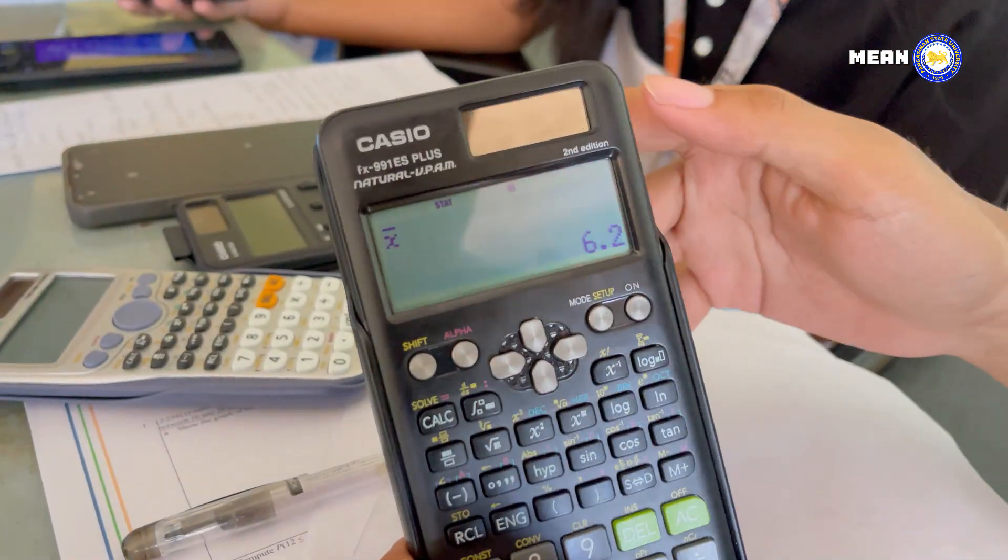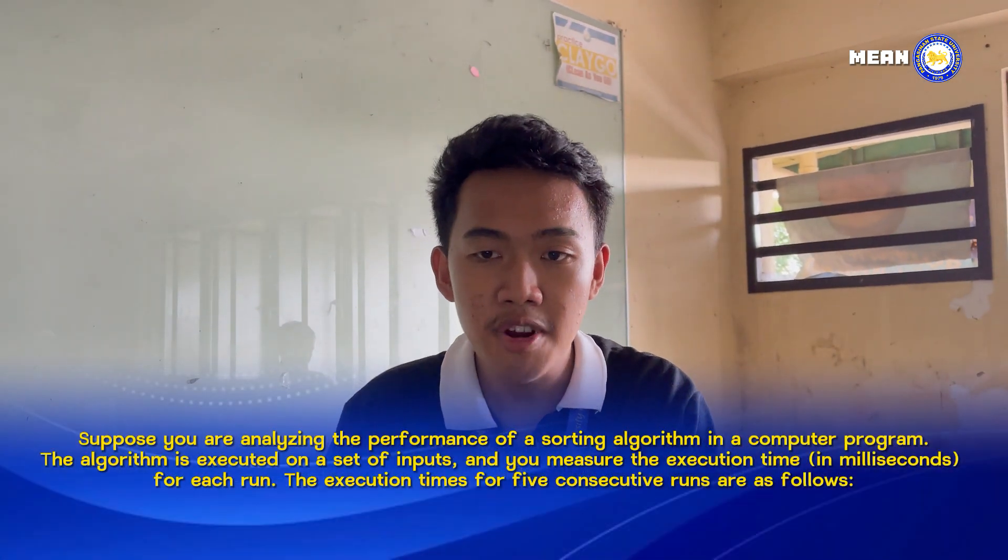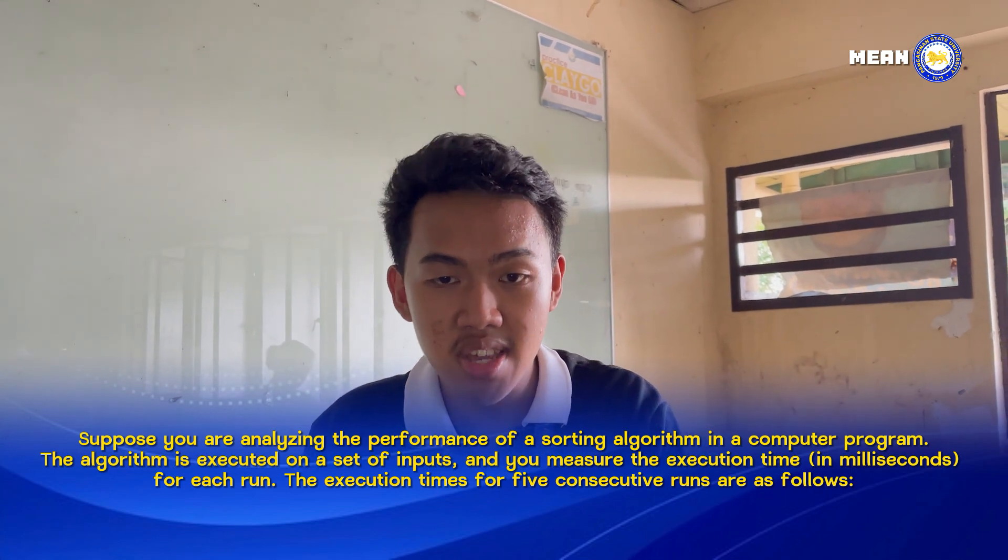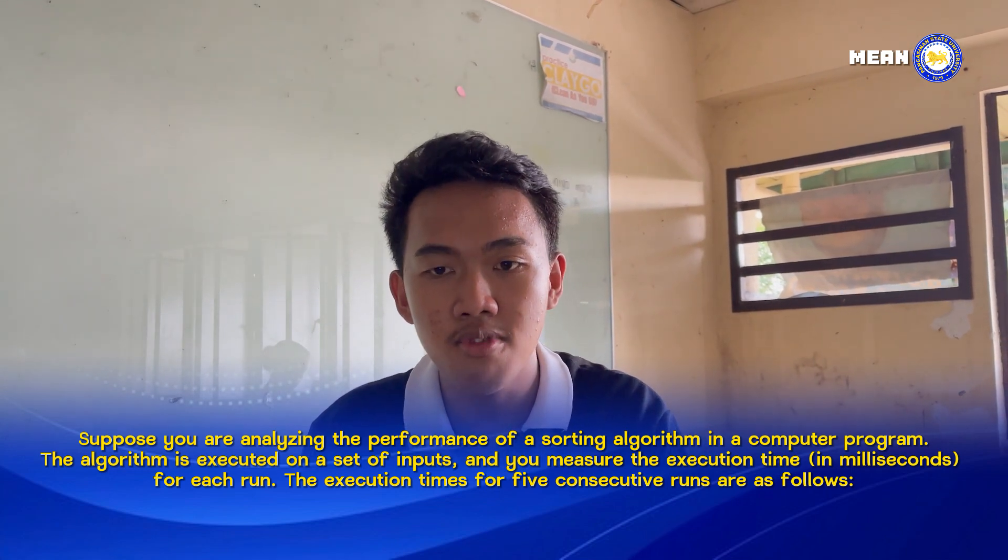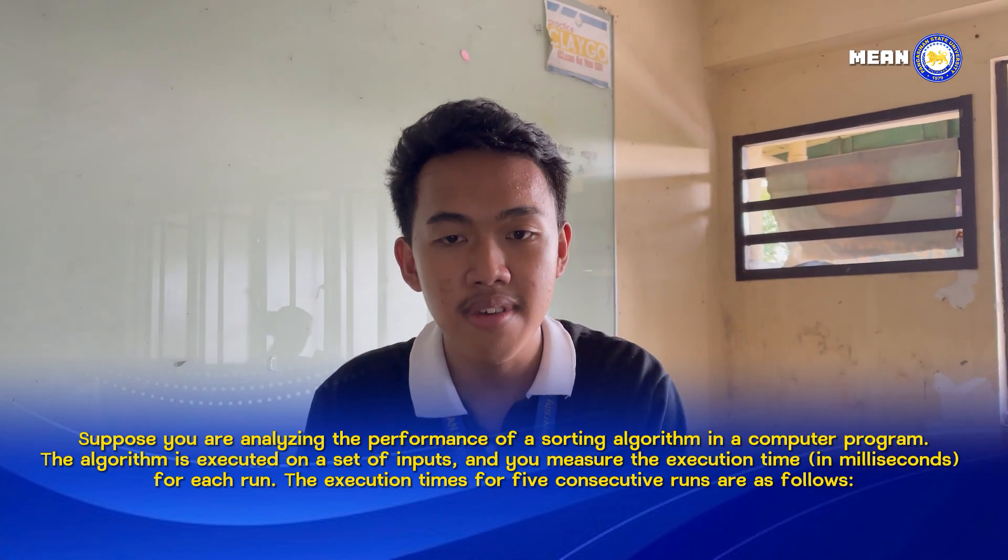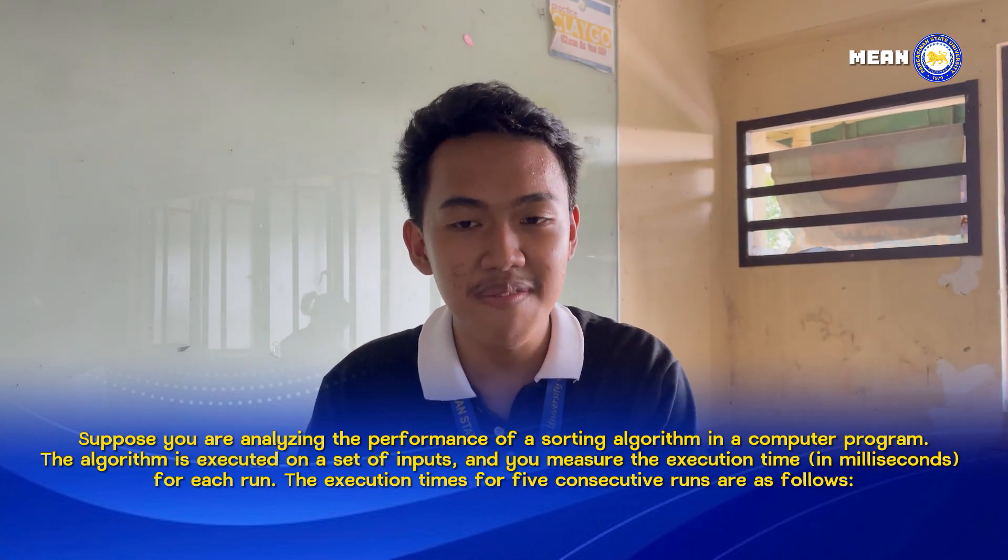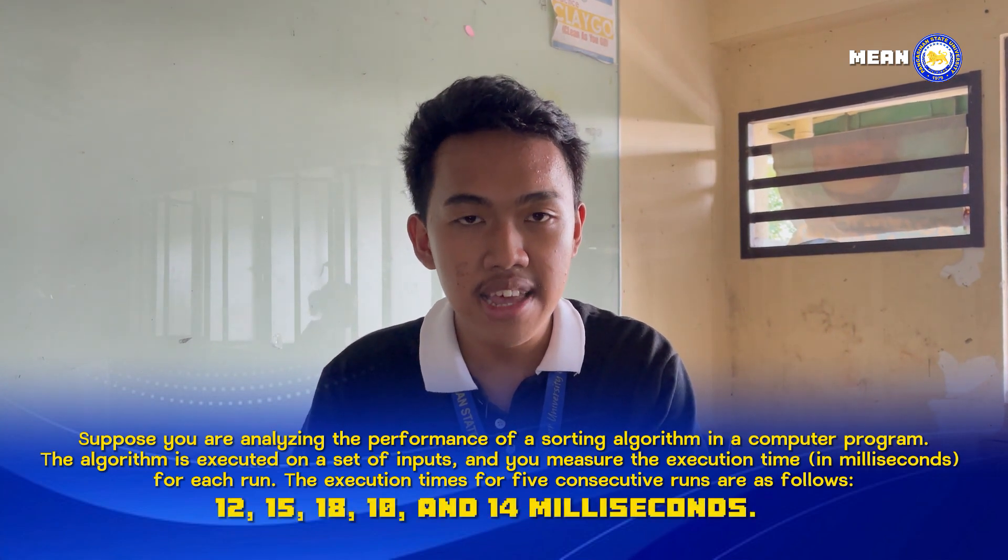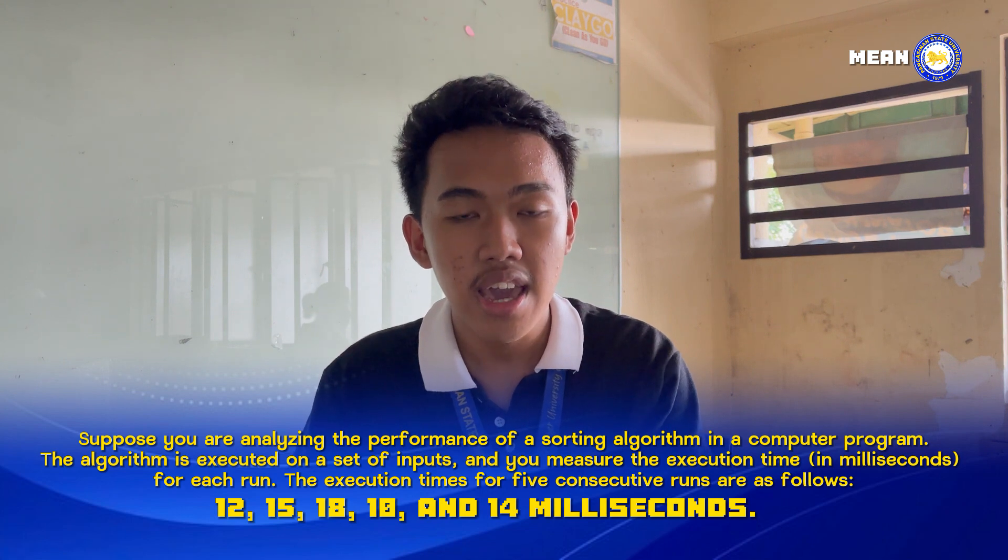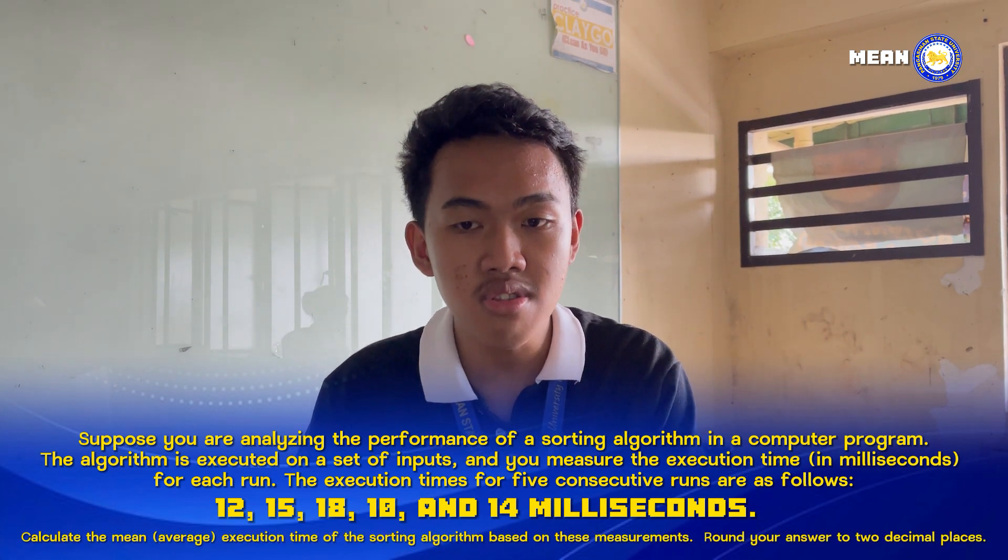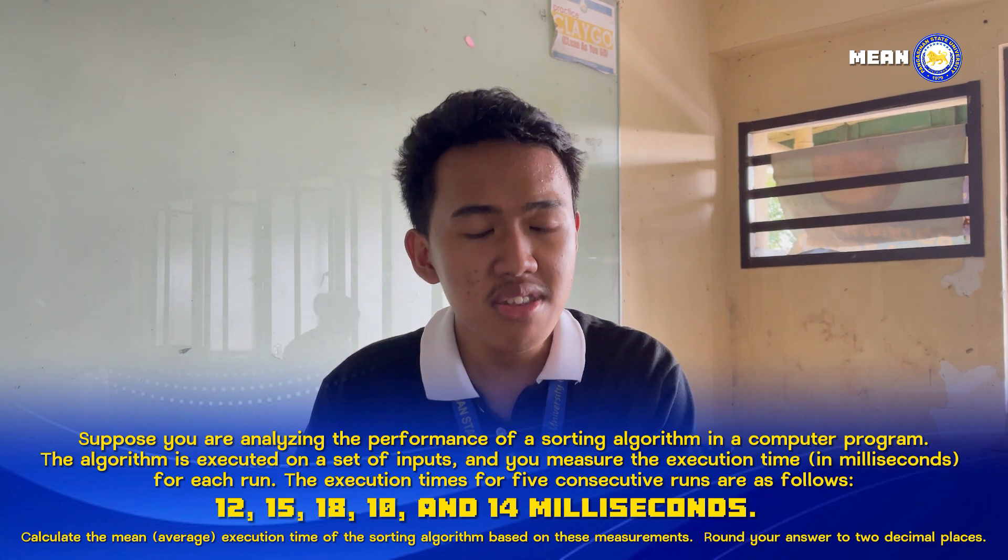Now for your example problem: Suppose you are analyzing the performance of a sorting algorithm in a computer program. The algorithm is executed on a set of inputs and you measure the execution time in milliseconds for each run. The execution times for five consecutive runs are as follows: 12, 15, 18, 10, and 14 milliseconds. Calculate the mean or average execution time of the sorting algorithm based on these measurements.